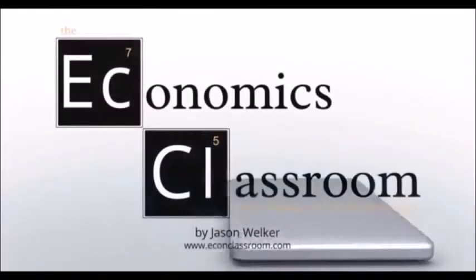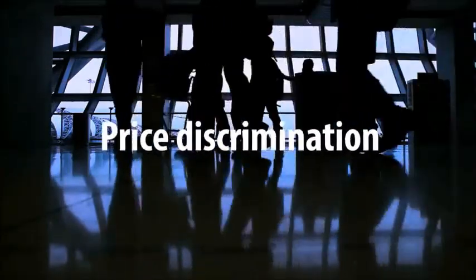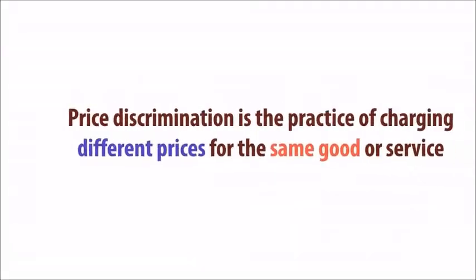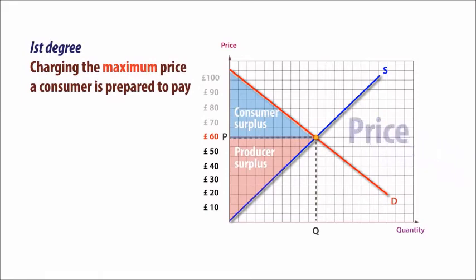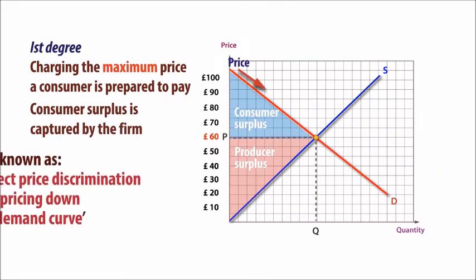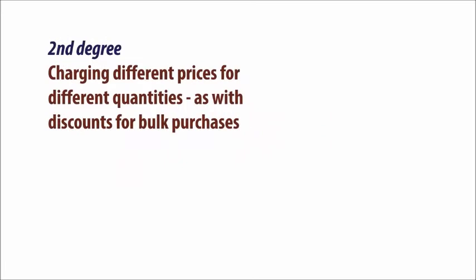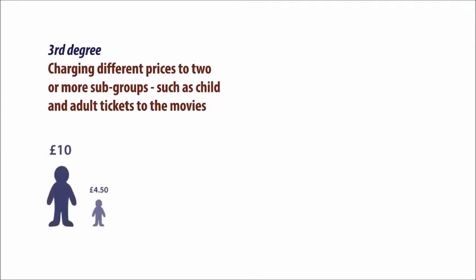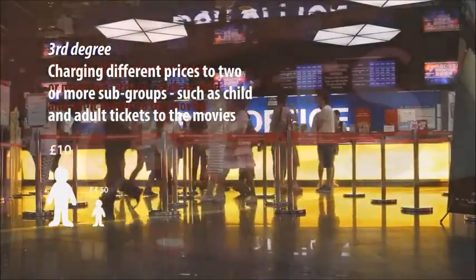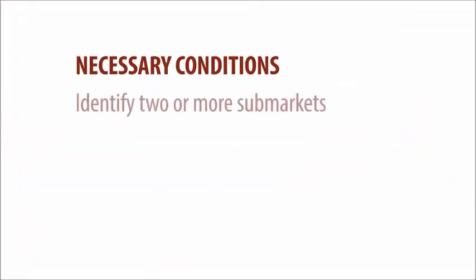Price discrimination is the practice of charging different prices for the same good or service. There are three main types. First-degree price discrimination exists when a firm charges a different price for every unit purchased, capturing all consumer surplus — also known as perfect price discrimination. While first-degree is relatively rare, second and third-degree are commonly practiced. Second-degree means charging different prices for different quantities, such as bulk discounts. Third-degree involves charging different prices to different types of consumers.